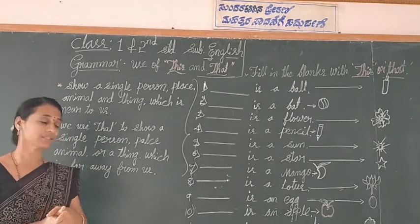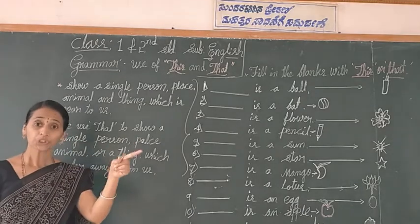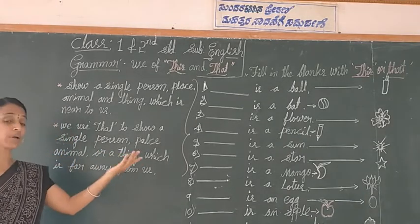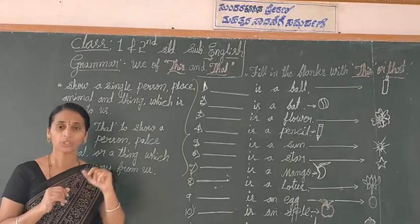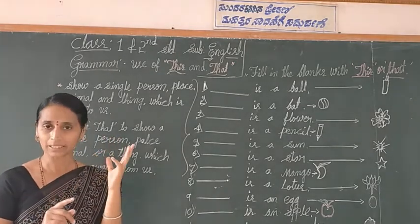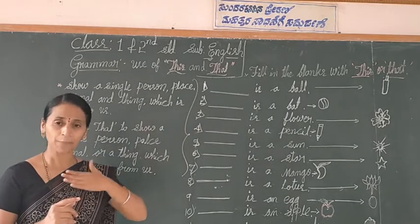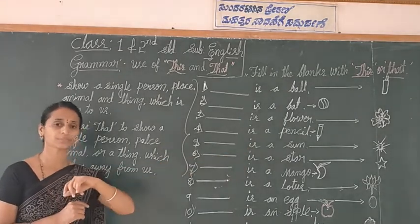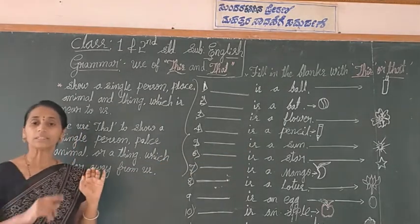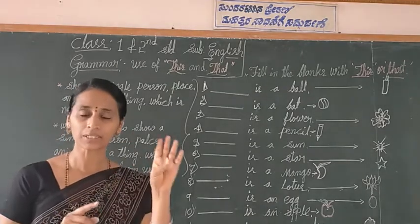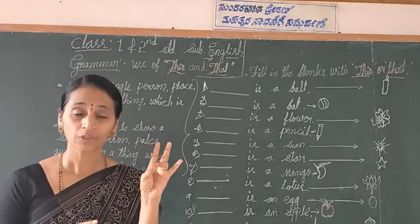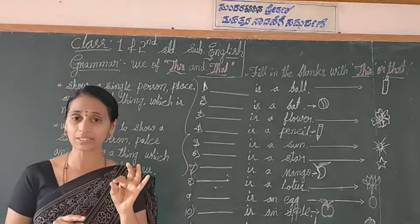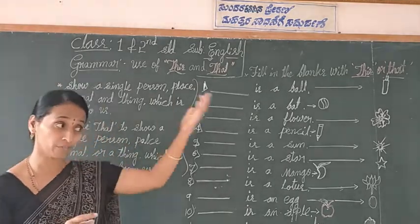And when do you use 'that'? We use 'that' to show a single person, animal, or a thing far away from us. Okay, do you understand, students? Once again: 'this' is used for a single person, place, animal, or thing near to me. 'That' is used for a single person, place, animal, or thing far away from us.